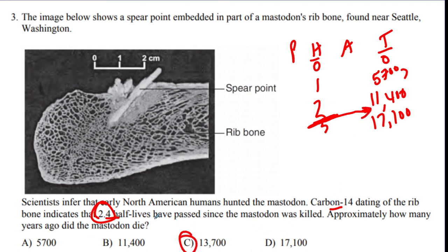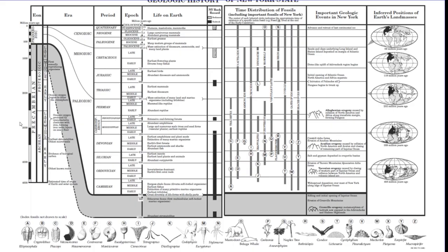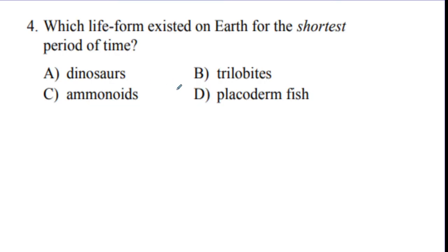Question four: which life form existed on Earth for the shortest period of time? The placoderm fish has the shortest bar on the chart, so the answer is D.